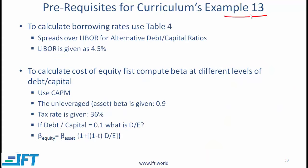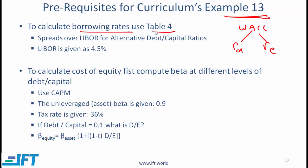Next, I will help you understand Example 13. Students frequently ask about this example. We are asked to calculate the weighted average cost of capital at different levels of debt, which implies different capital structures. To compute WACC, you need the cost of debt and the cost of equity. You calculate the cost of debt using borrowing rates in Table 4, where you are given the spreads over LIBOR for different levels of debt relative to capital. Capital equals debt plus equity.